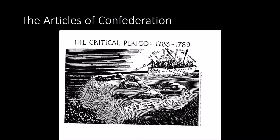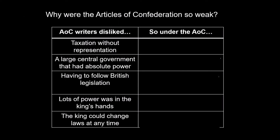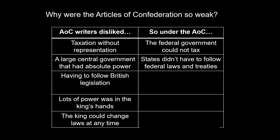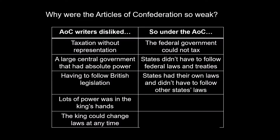Let's look at what the Articles did and didn't do — the weaknesses. Most historians agree the Articles of Confederation are weak, and they were designed to be weak on purpose. The writers disliked taxation without representation, so under the Articles the federal government could not tax. They disliked a large central government with absolute power — that's what they feared about Britain — so states didn't have to follow federal laws or treaties. And because they disliked power concentrated in the king's hands, there was no executive branch: no president, no king, no court system.